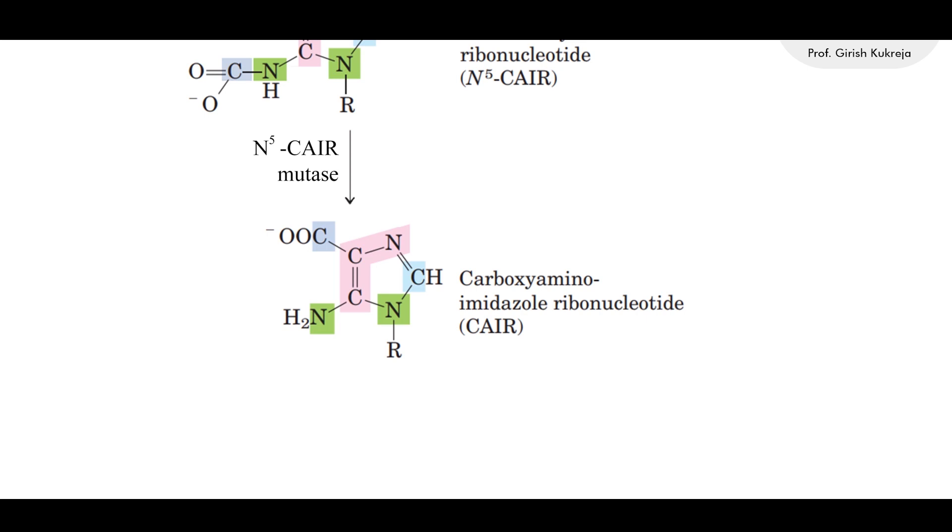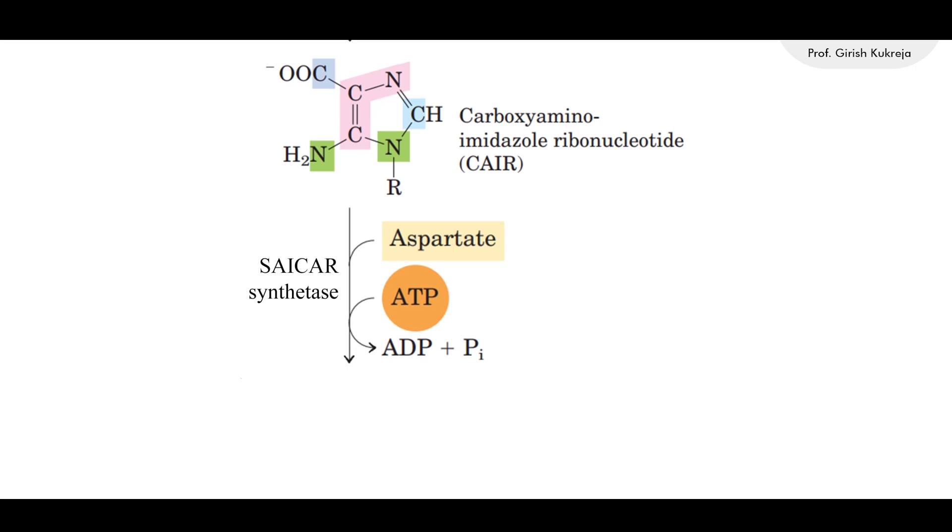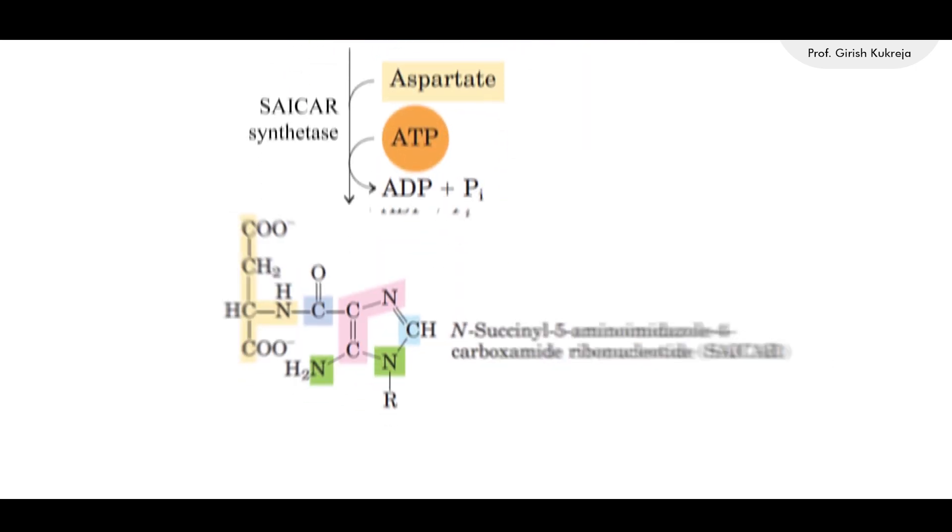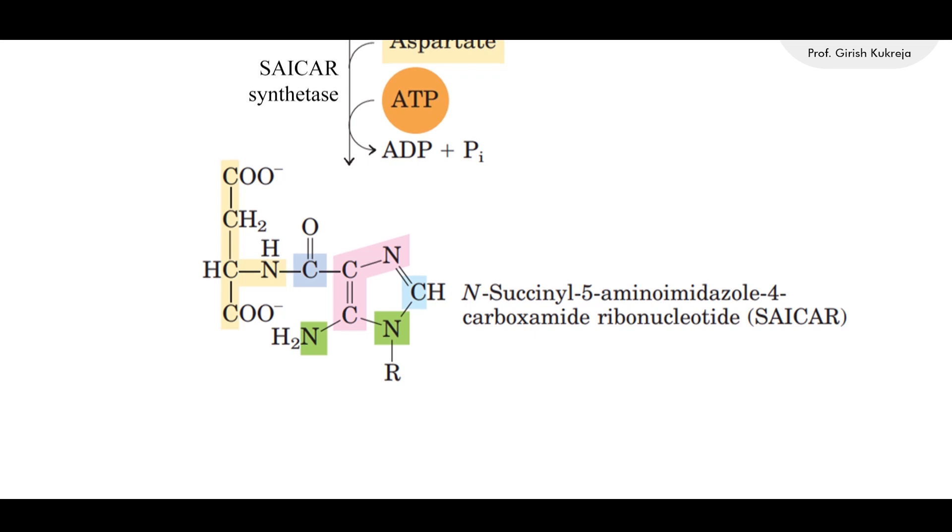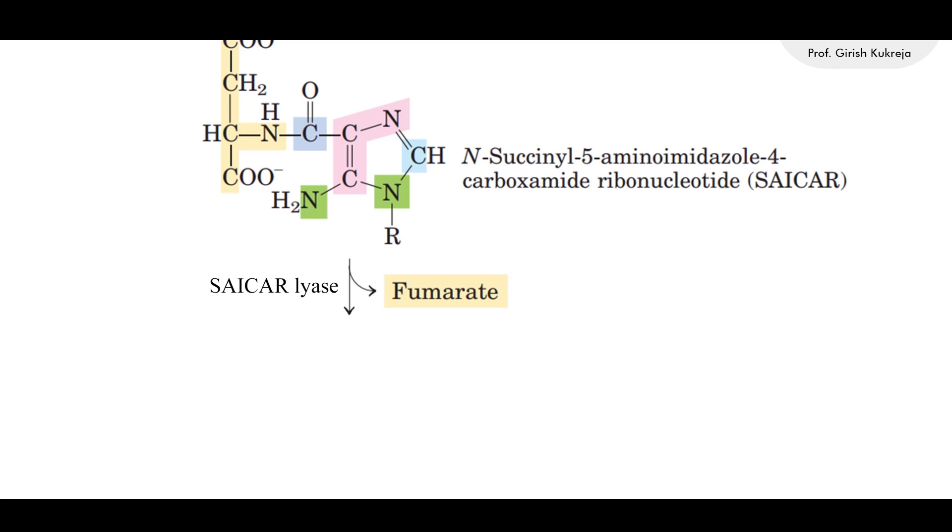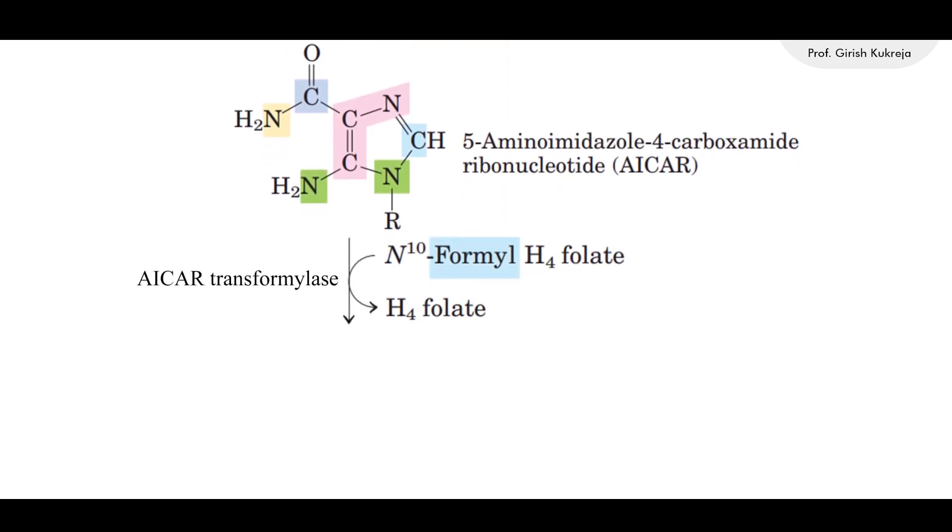The above two steps occur only in bacteria and fungi. For higher eukaryotes, the 5-AIR is directly carboxylated to CAIR in one step by AIR carboxylase. Next, the amino group comes from aspartate. The first amide bond is formed, forming N-succinyl-5-aminoimidazole-4-carboxamide ribonucleotide, SAICAR. Then there is a removal of carbon skeleton of aspartate as fumarate to form 5-aminoimidazole-4-carboxamide ribonucleotide, AICAR.